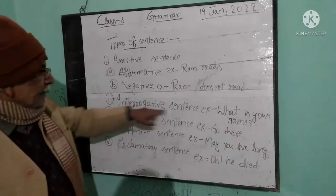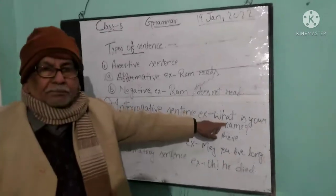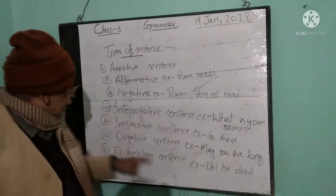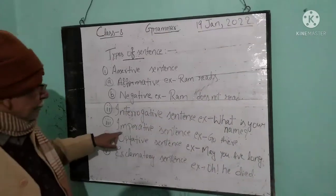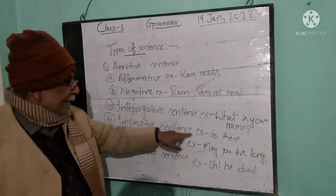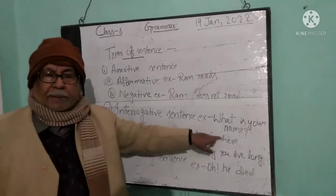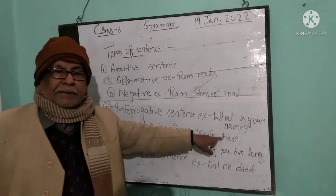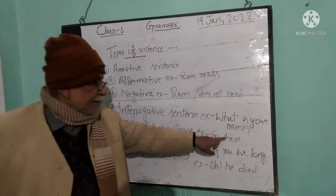Interrogative sentence: 'What is your name?' Imperative sentence is an order or request — 'Go there,' 'Help me.' This is an imperative sentence.